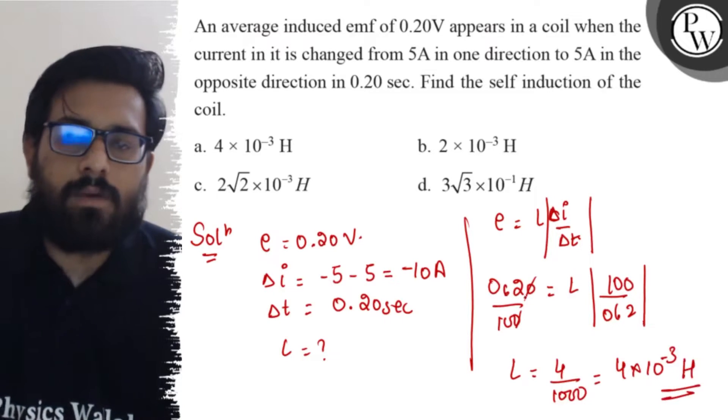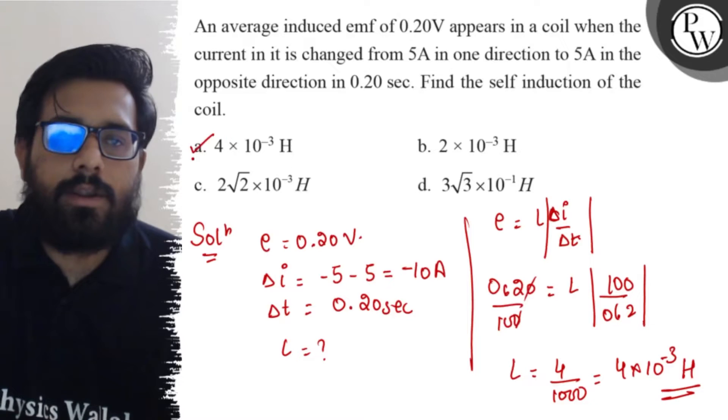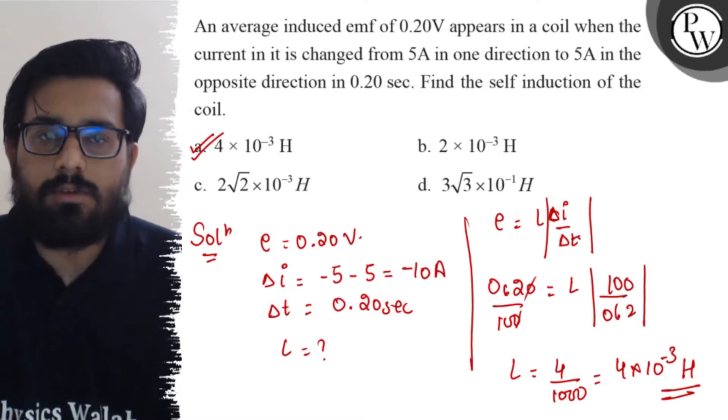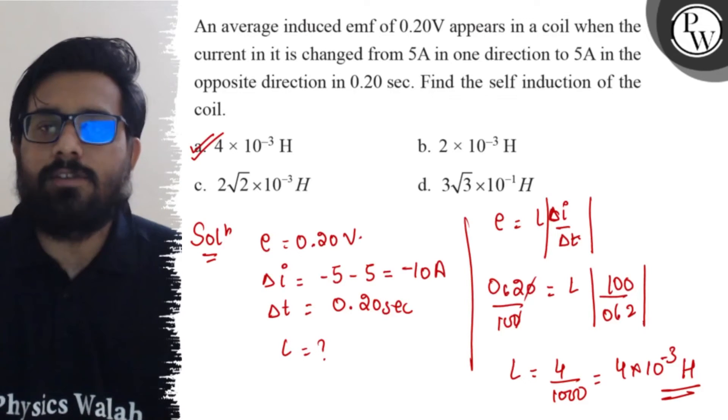Henry. So I get the answer 4 into 10 to the power minus 3 Henry which is my first option. So our first option is absolutely right and I hope the concept of this question is now clear to you. All the very best.